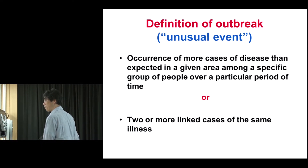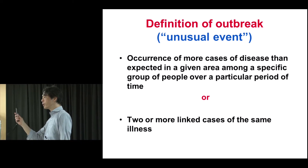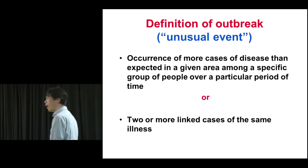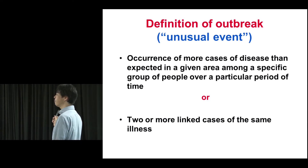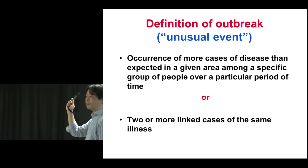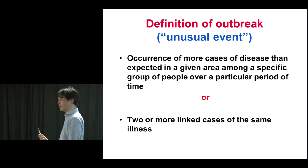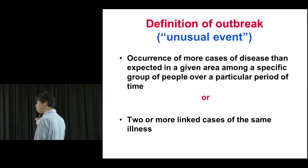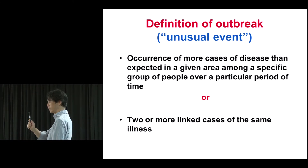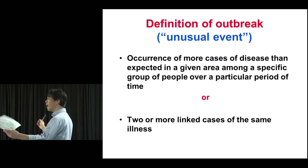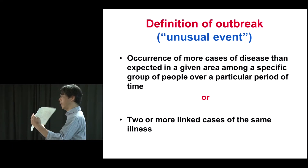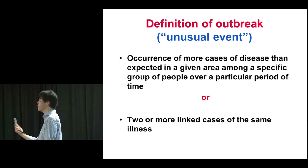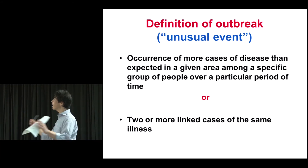Have you ever heard of public health surveillance? Surveillance is a very important weapon for public health practitioners and epidemiologists. Specifically for communicable diseases in Japan, we have a national surveillance system. Every week and every month, when doctors identify measles or influenza cases, they must report to the public health office in their local area. That information is gathered and aggregated at the national level by the National Institute of Infectious Disease, where field epidemiologists and public health practitioners summarize and analyze the data.